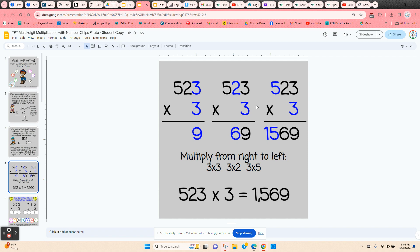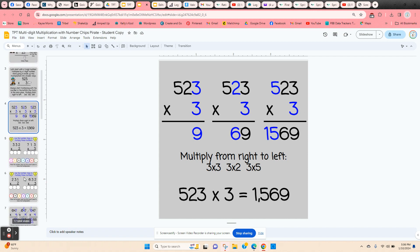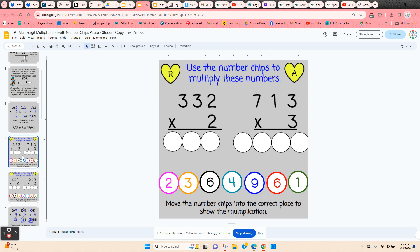3 times 5 is 15. They'll start on slide 5 and they have these movable number chips, so they're going to move them into the correct place to do their multiplication. It starts out with some simpler problems and it gets more difficult as they go.